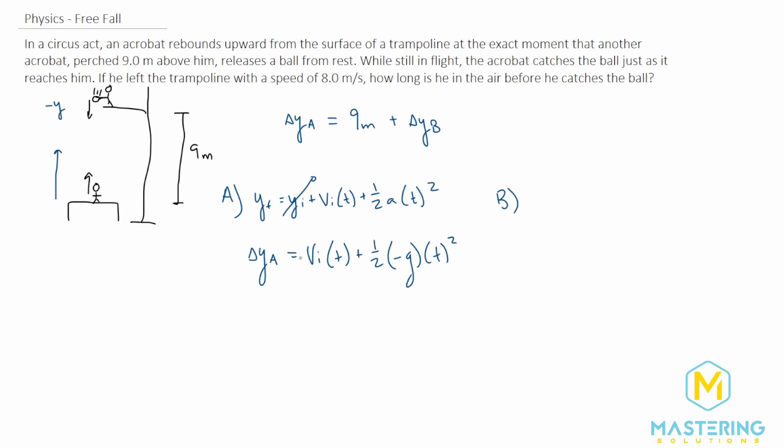Okay, so we have our delta y for the acrobat. Now we need to put in our delta y for the ball. This is going to be the exact same thing, so we have y_final minus y_initial. Since it's this equation right here, we can move that over just like we talked about a second ago to give us Δy_b equals velocity initial times t plus one half times acceleration, which we'll put in as negative g, just like we spoke about, times t squared.